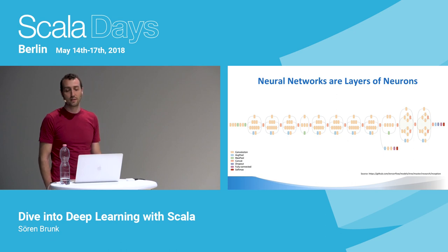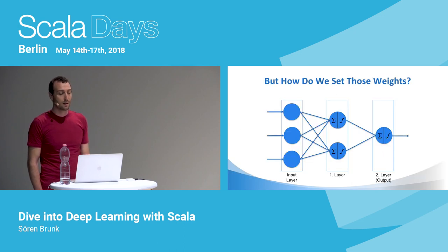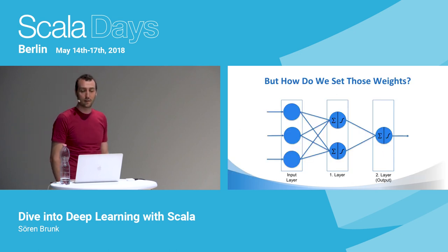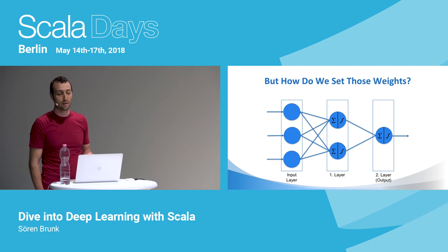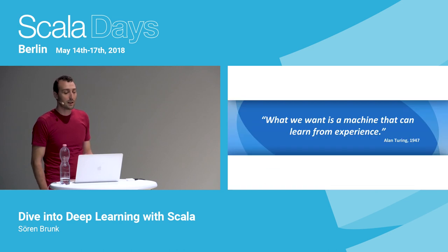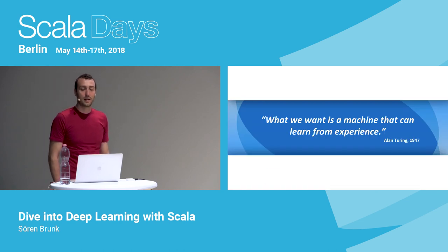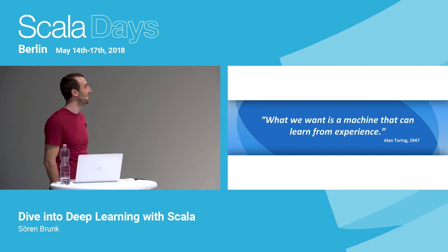But how do we set those weights? In order to get the network to actually compute what we want — how do we program the network? The answer is: we learn them. And that's what machine learning is all about.